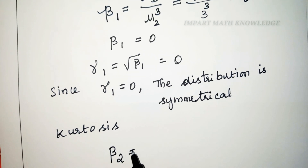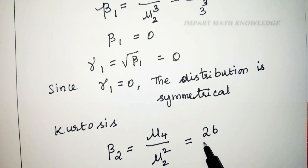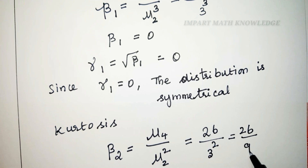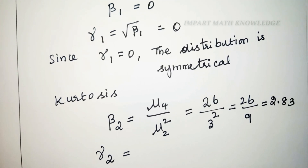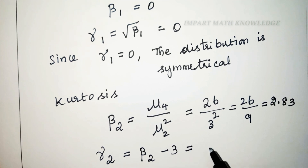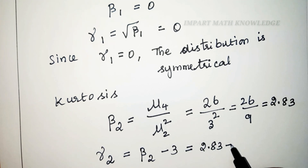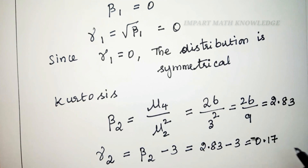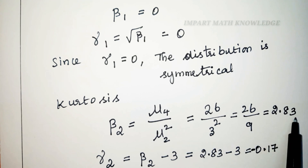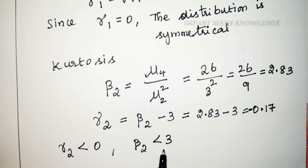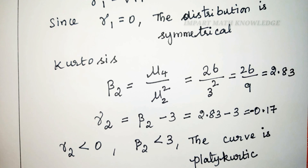Kurtosis based on moments: beta2 equals mu4 divided by mu2 squared equals 26 divided by 9, which is approximately 2.83. Gamma2 equals beta2 minus 3 equals 2.83 minus 3 equals minus 0.17. Since gamma2 is less than 0 and beta2 is less than 3, the frequency curve is platykurtic.